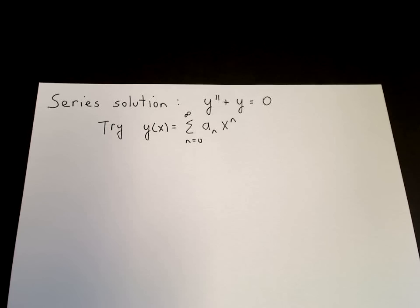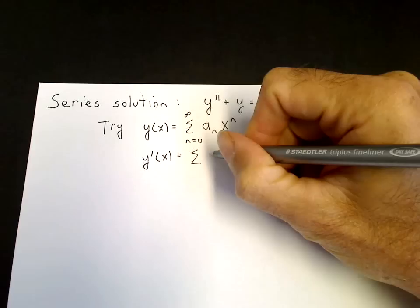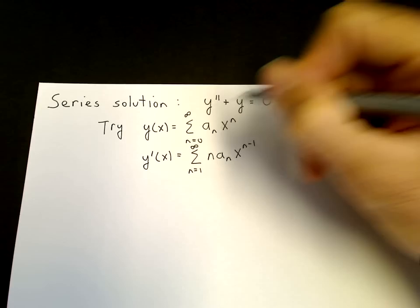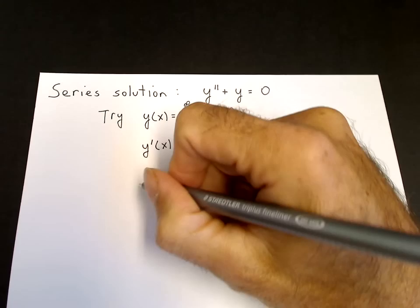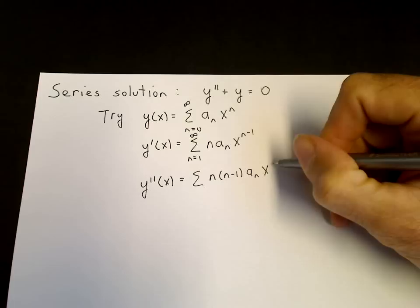To do this, we need to find the second derivative of y. We differentiate term by term. The first derivative brings down an n, so we get n times a sub n times x to the n minus 1, starting from n equals 1 to infinity because the n equals zero term is constant. The second derivative brings down n minus 1, giving n times n minus 1 times a sub n times x to the n minus 2, starting at n equals 2 to infinity.